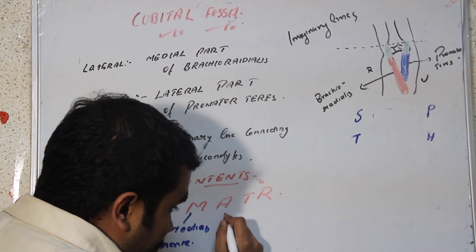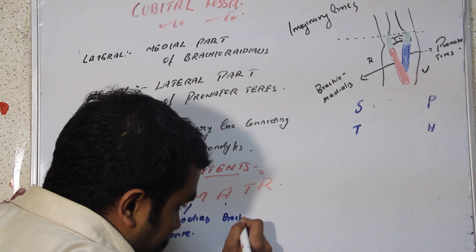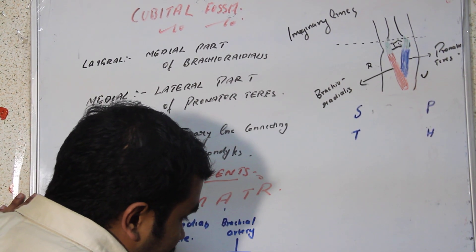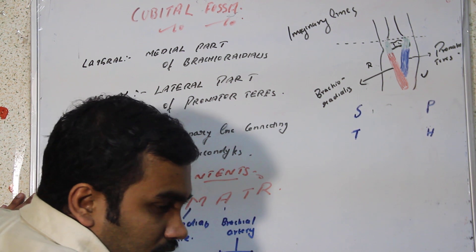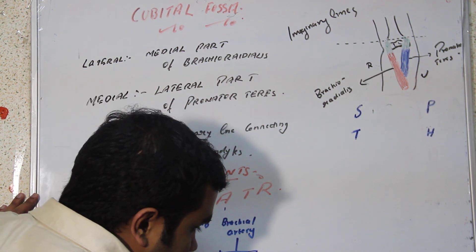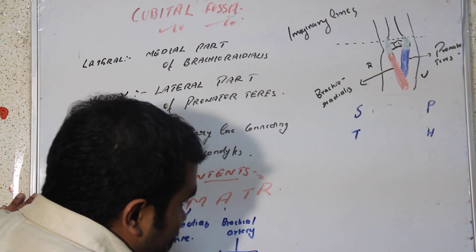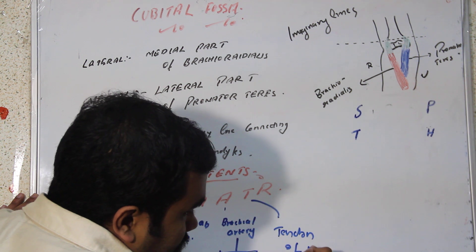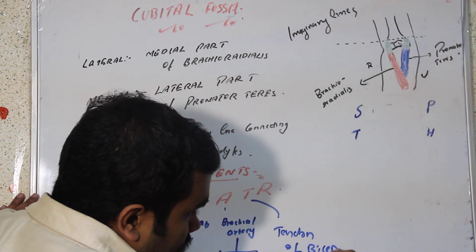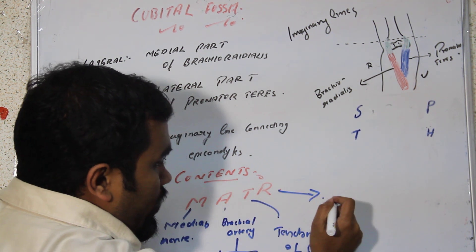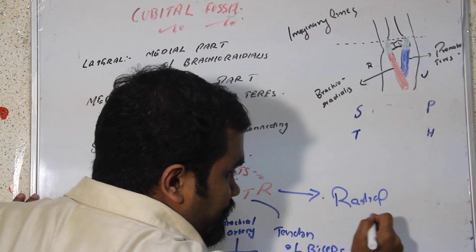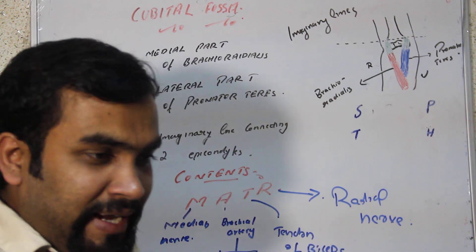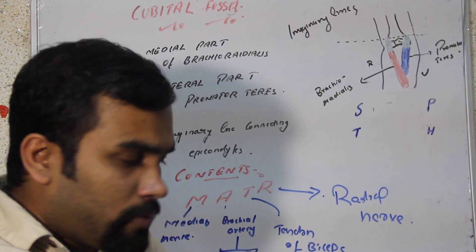A is for artery — the brachial artery, which can be two: the ulnar artery and the radial artery. T is for the tendon of biceps. And R is for the radial nerve.